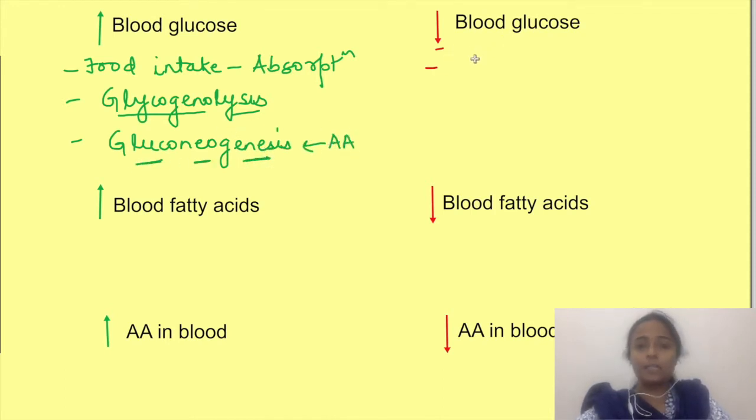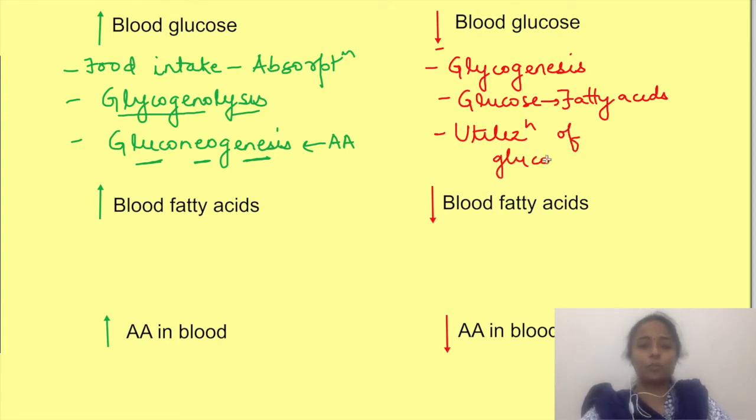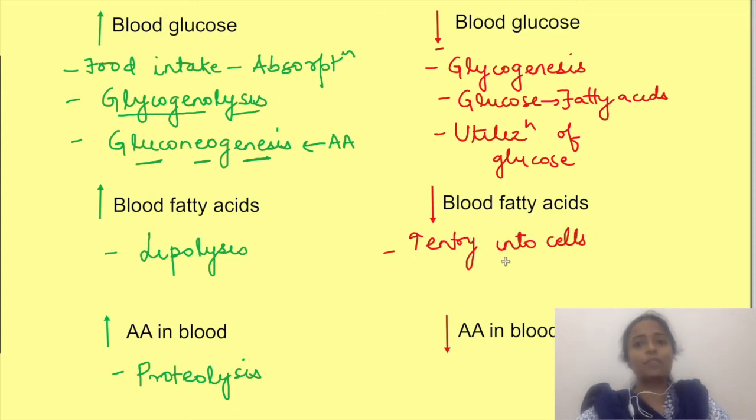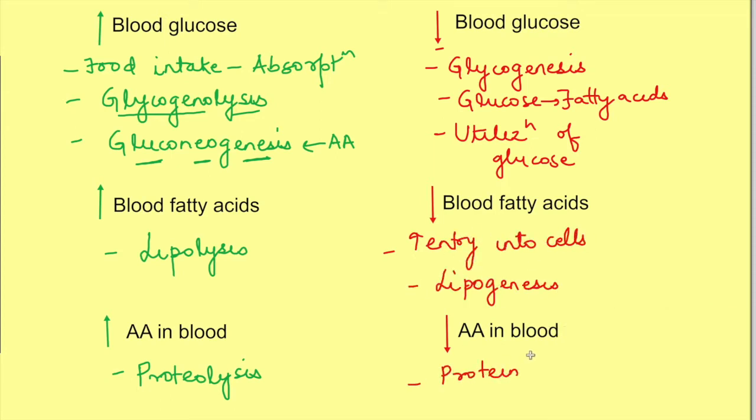Now factors which cause decrease in blood glucose concentration are storage of glucose as glycogen, that is glycogenesis, which occurs mainly in liver and skeletal muscles. Also storage of excess glucose as fatty acids occurs in liver and finally utilization of glucose by peripheral tissues. Similarly for fats and proteins, concentration is increased by lipolysis and proteolysis respectively and decreased by promoting their entry into cells and causing fatty acid synthesis and protein synthesis respectively.